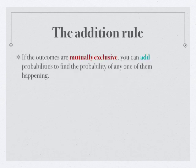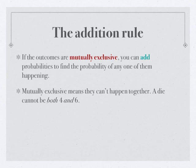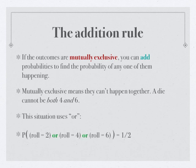This gave rise to the addition rule. The outcomes are mutually exclusive. Add probabilities to find the probability that one of them is happening. Mutually exclusive means they can't happen together. A die cannot be both 4 and 6. Situation uses OR.